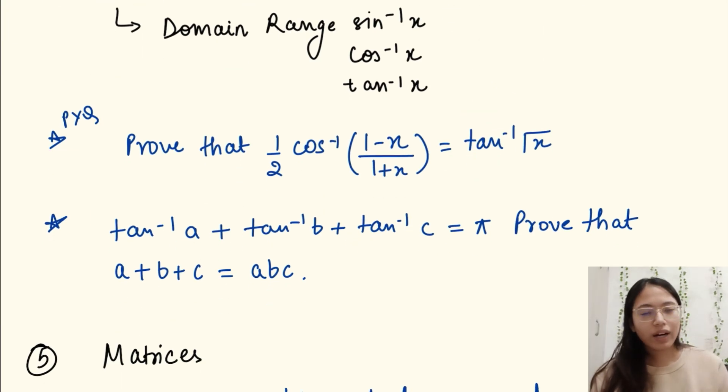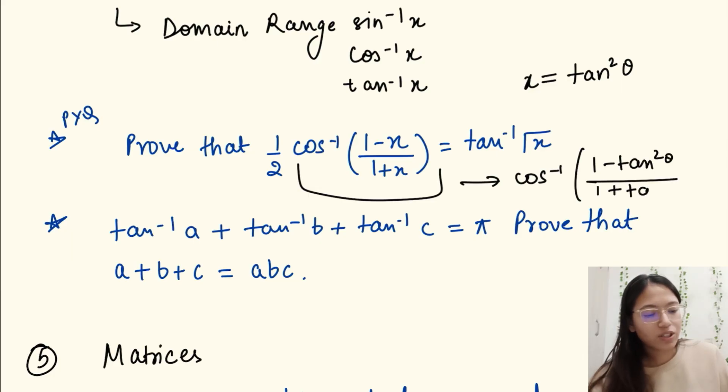Now just have a look at the PYQs. Prove that 1 by 2 cos inverse (1 minus x) divided by (1 plus x) is equal to tan inverse root x. Here if I put x is equal to tan square theta, so this will be, this portion: cos inverse (1 minus tan square theta) divided by (1 plus tan square theta). Now just tell me, this is cos 2 theta, am I right?